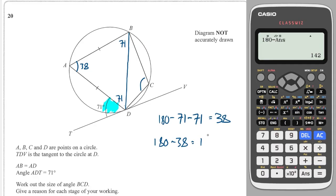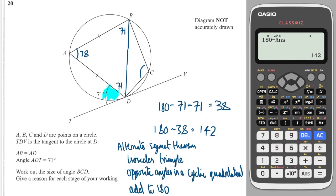The reasons to state are: alternate segment theorem, isosceles triangle, and opposite angles in a cyclic quadrilateral add to 180°.